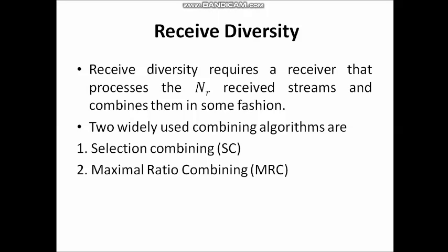In receiver diversity, the independent fading paths associated with multiple receive antennas are combined to obtain a resultant signal. This receive diversity requires a receiver that processes the NR received streams and combines them in some fashion. This helps us to increase the signal to noise ratio. We have already seen two types of gains associated with receiver space diversity, namely array gain and diversity gain.